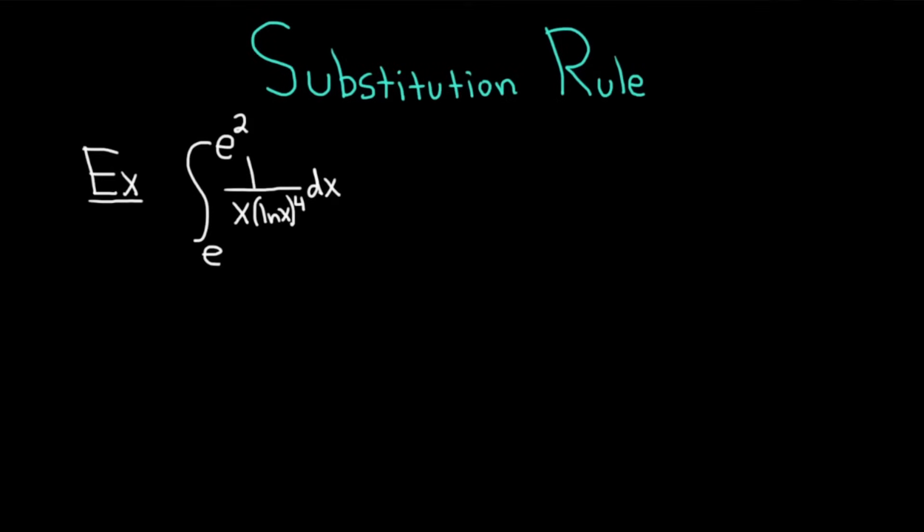Hi, everyone. It's the Mathsorcer here with Chegg. In this video, we're going to discuss the substitution rule. Let's go ahead and work through this example. So we have the definite integral from e to e squared of 1 over x times, and then we have the natural log of x raised to the fourth power, and we're integrating with respect to x.